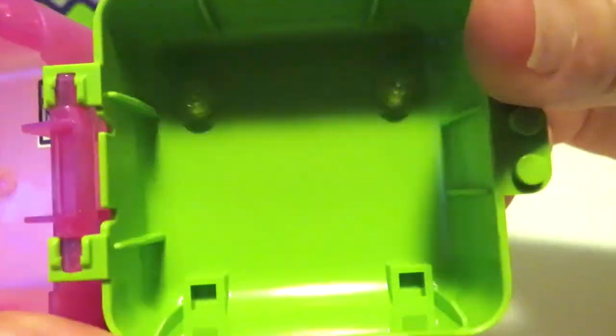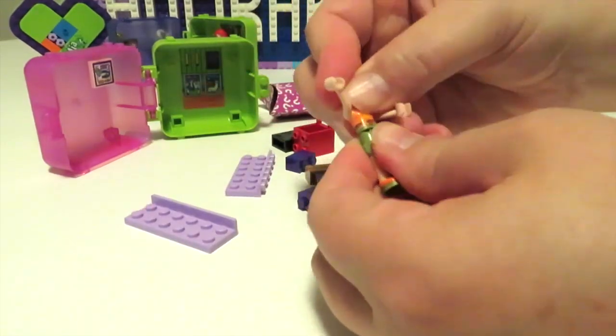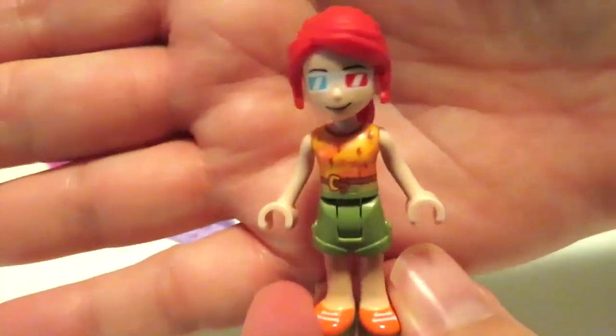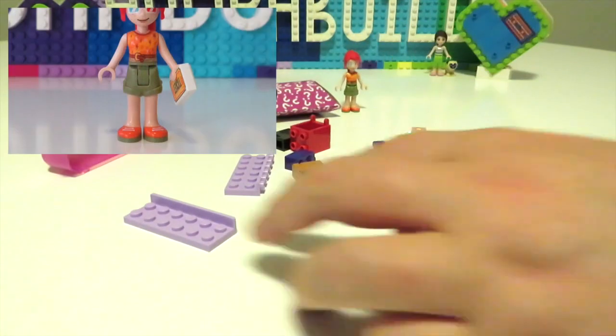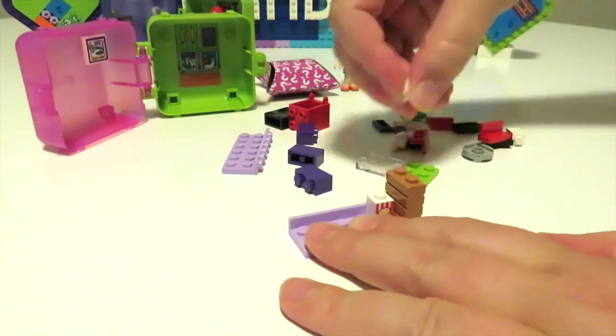Add in another sticker on the back. And we put together the Mia mini doll who is wearing a fabulous pair of 3D glasses, because this particular Play Cube does seem to be focusing on a cinema or the movies or going to watch a film.